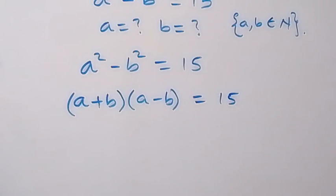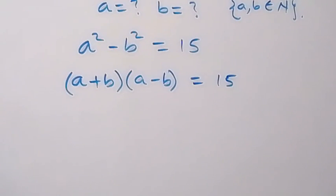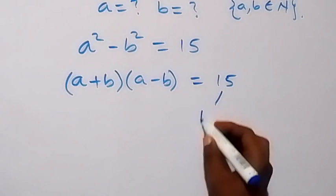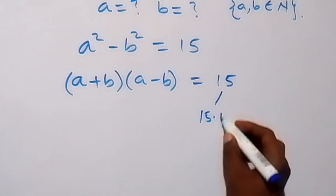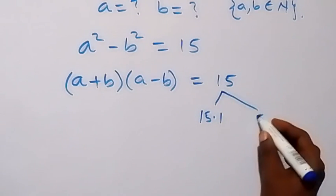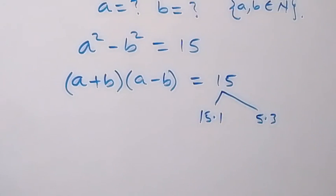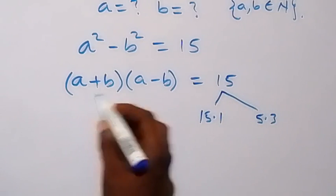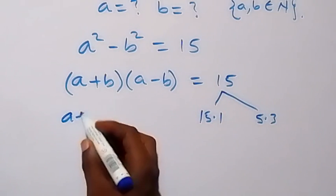So 15 here can be written in two ways: as 15 times 1, and also we can write it as 5 times 3.